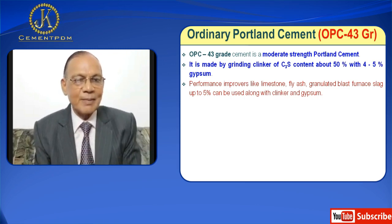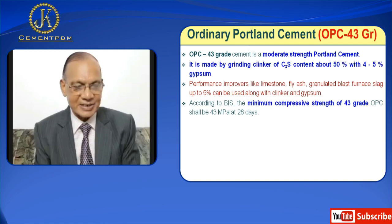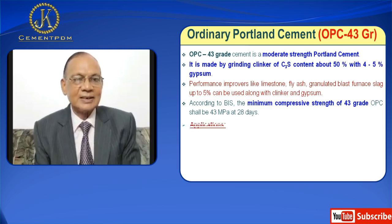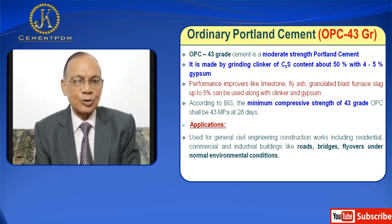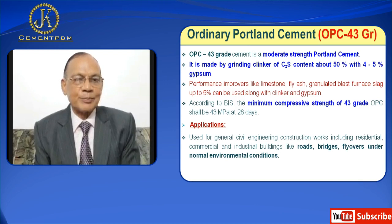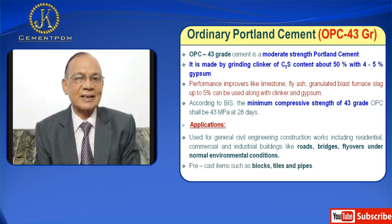According to BIS, the minimum compressive strength of 43 grade OPC shall be 43 MPa at 28 days. Applications include general civil engineering construction work including residential, commercial, and industrial buildings like roads, bridges, and flyovers under normal environmental conditions. Then precast items such as blocks, tiles and pipes, and non-structural work such as plastering and flooring.